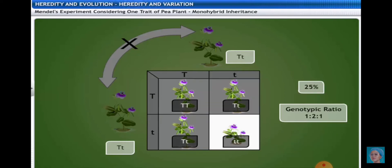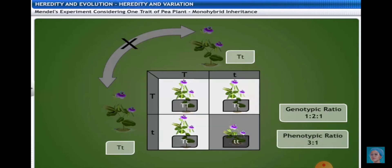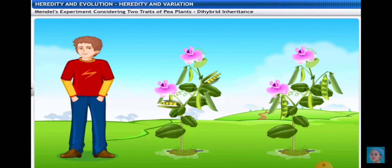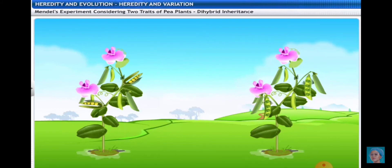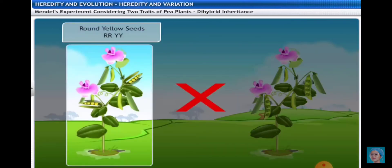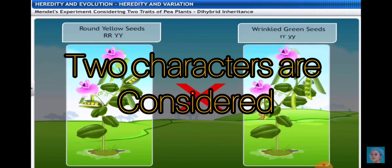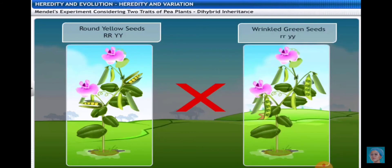At the end of the F2 generation, we conclude that a recessive character can be expressed only when present in homozygous condition. Now, if we consider two characters at a time, this is called a dihybrid cross. The two characters here are seed shape and seed color — one parent has round and yellow seeds (homozygous RR YY).